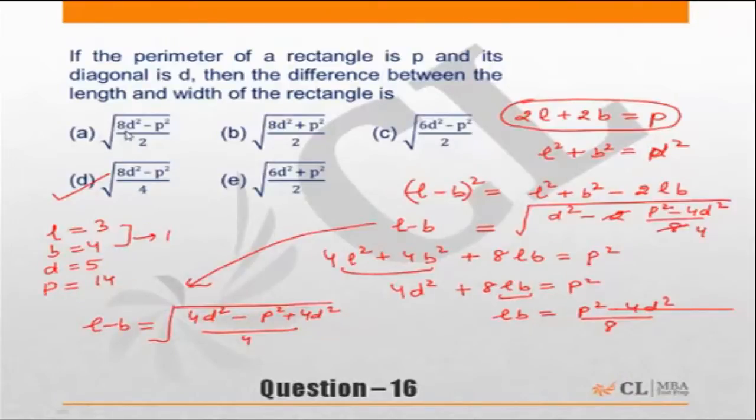If I check here, if it is 5 square, 25 into 8, 200 minus 14 square. 200 minus 14 square will be 4. So 4 by 2 root. So this is not 1.